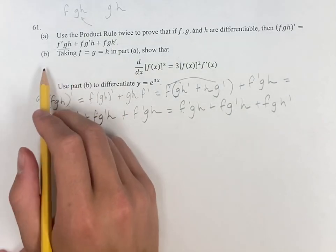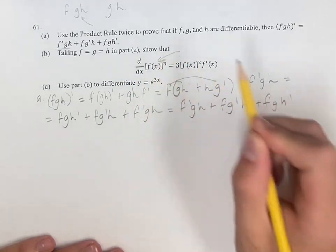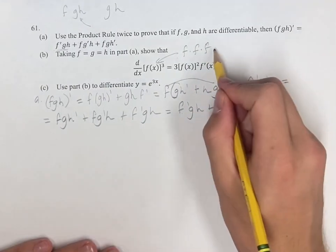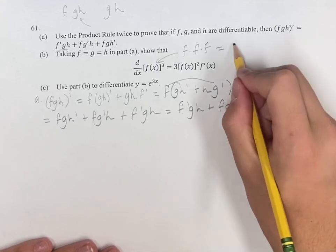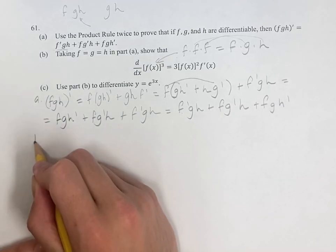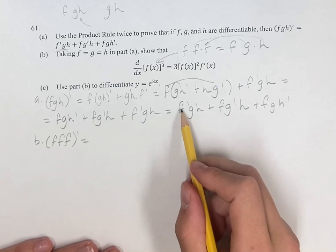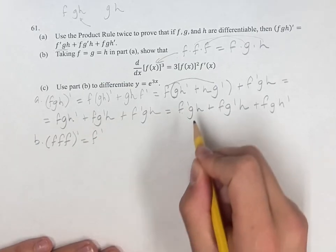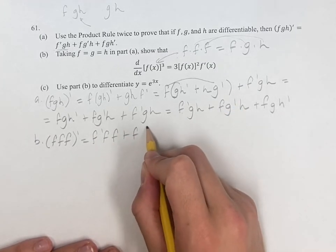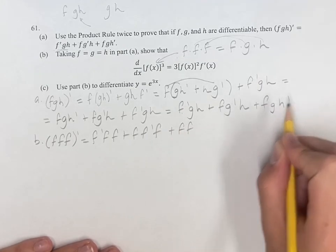And therefore, taking f equals g equals h, show that this statement is true. We have f cubed, and this is equal to f times f times f. This is basically saying f equals g equals h — this is just f times g times h, except g equals f and h also equals f. So here we have f times f times f, and this is equal to the first f times the derivative of the second f times the third f, plus the first f times the derivative of the second f times the third f, plus f times the second f times the derivative of the third f.